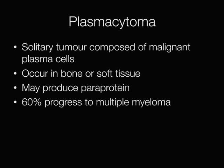Sometimes there may be a solitary tumour composed of malignant plasma cells, called a plasmacytoma. Plasmacytomas occur in bone or soft tissue and may produce a paraprotein, and 60% of cases of plasmacytoma go on to develop multiple myeloma.